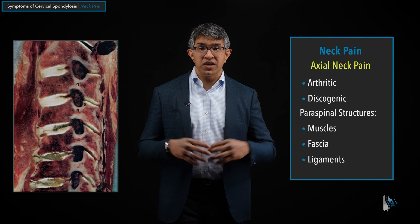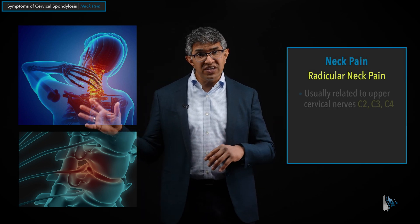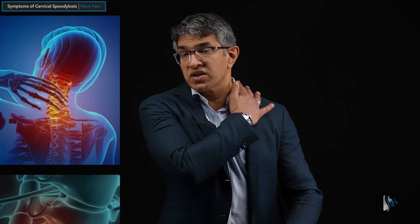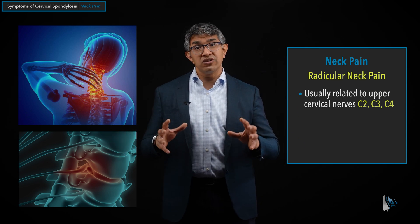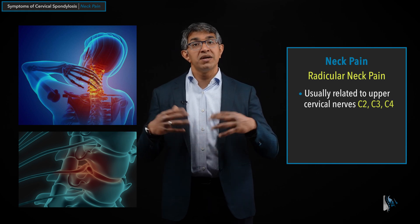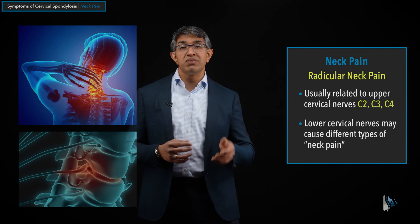There are a lot of paraspinal structures — structures that are around the spine — that can cause neck pain, and all of that can present as just run-of-the-mill neck pain. There are also other forms, including radicular neck pain, which we discussed briefly when we talked about upper cervical radiculopathy. C2 and C3 can cause pain here and higher up; C4 will often cause pain in the neck area. Nerve root-related neck pain is really a diagnosis of exclusion — you have to make sure there's nothing else and truly verify the source before recommending anything more aggressive.